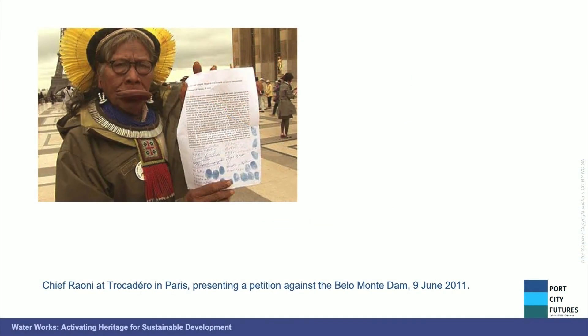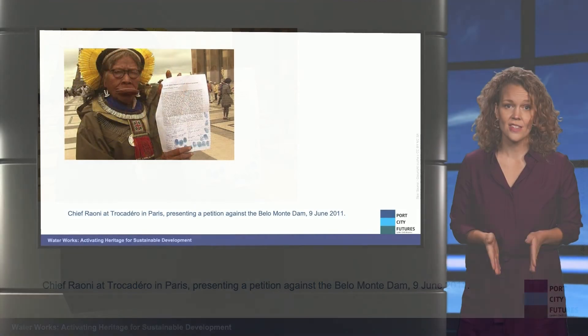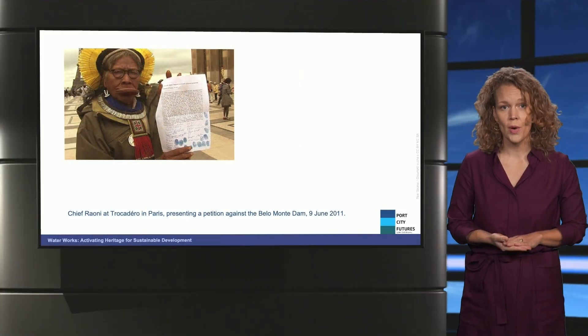One of the pictures I came across when I looked for another dam, the Belo Monte Dam in Brazil, was of an indigenous person holding what looks like a petition. When you look closely, you see that he is in Europe — Paris to be precise. The title tells us that he is in a very special place in Paris, a square called Parvis Droits de l'Homme, dedicated to human rights, a place where people from all over the world have come to protest injustices and violations of human rights.